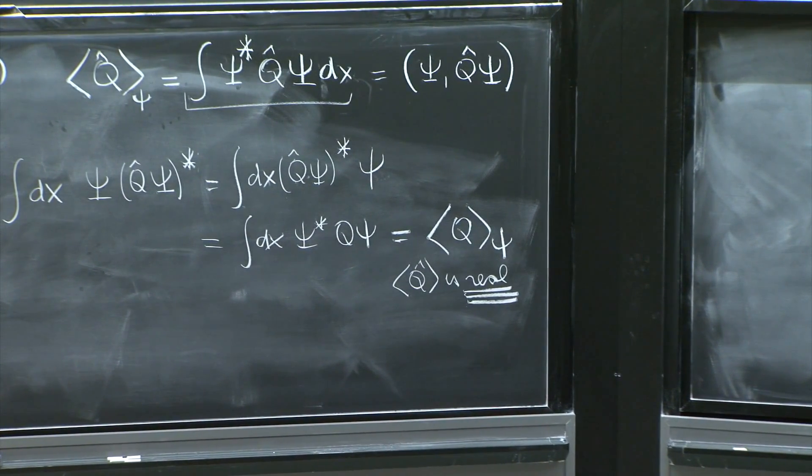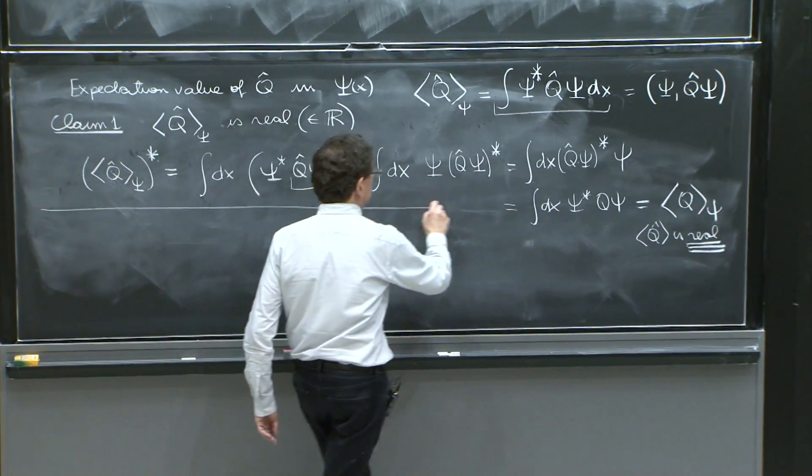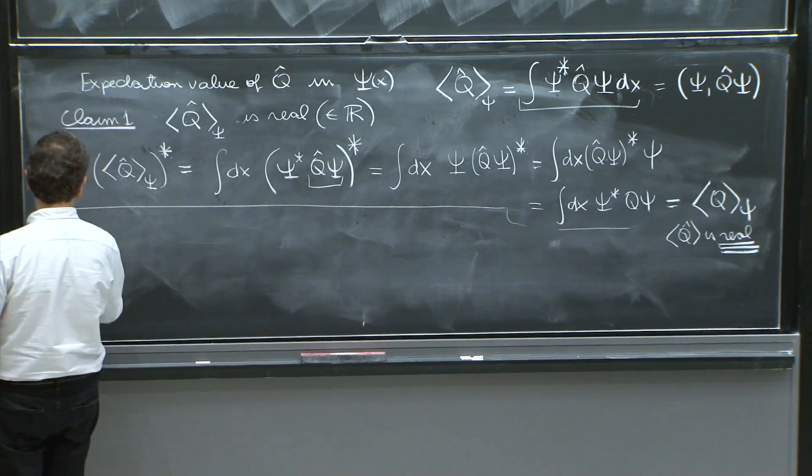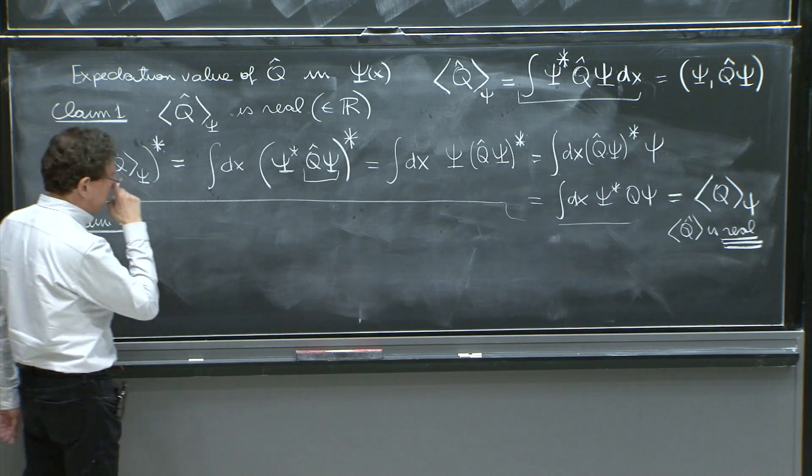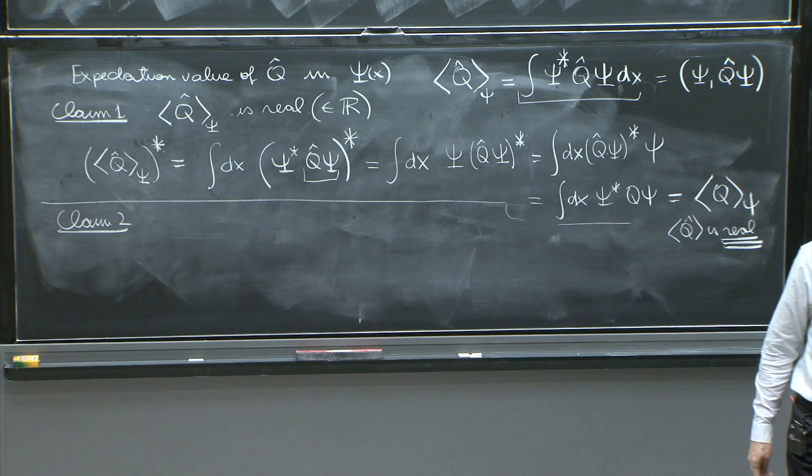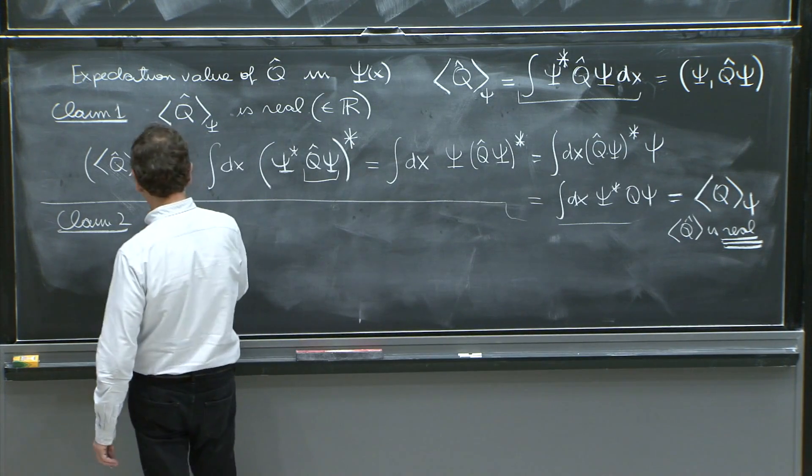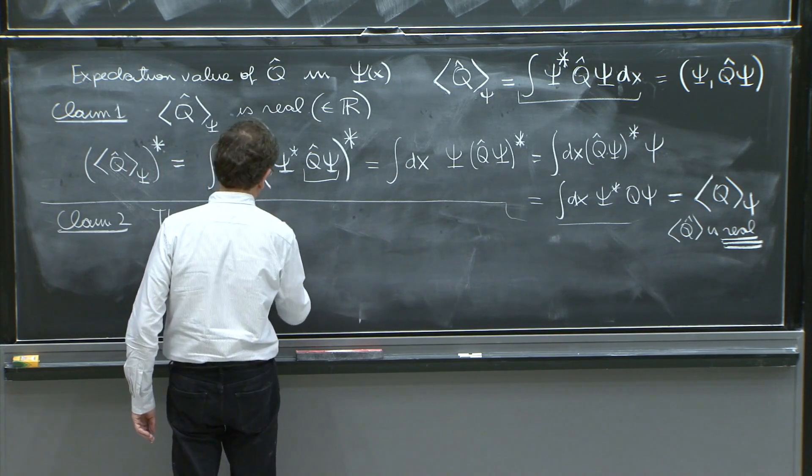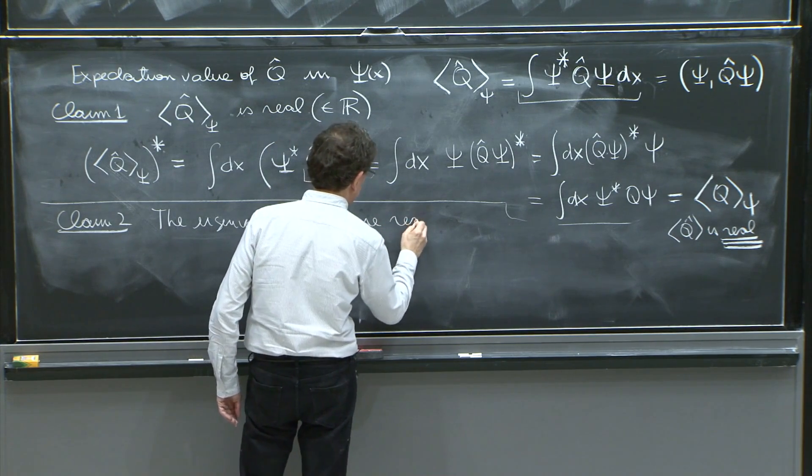So this is our first claim. The second claim that is equally important: Claim two. The eigenvalues of the operator Q are real.